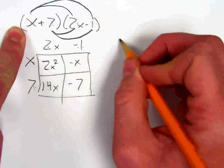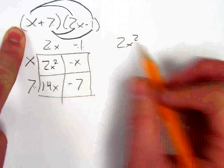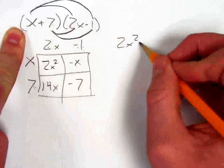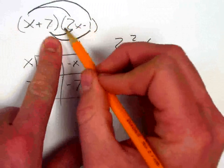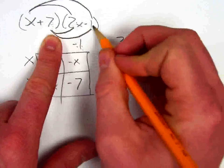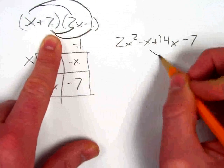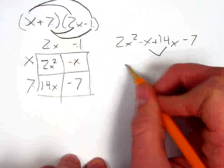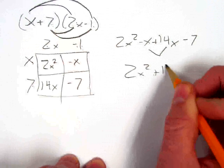So x times 2x is 2x squared. x times negative 1 is negative x. 7 times 2x is 14x, and 7 times negative 1 is negative 7. Those like terms will combine to give me 13x.